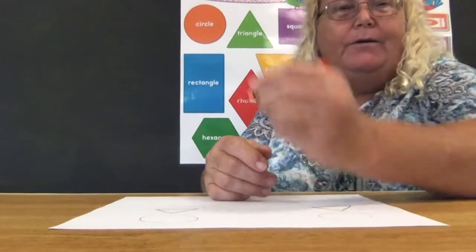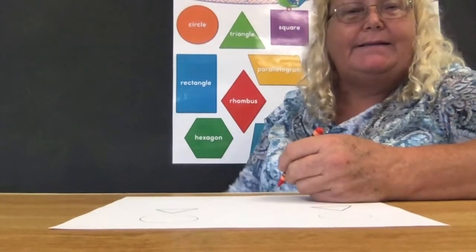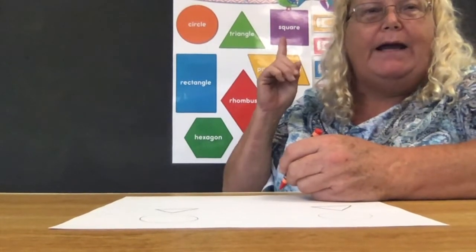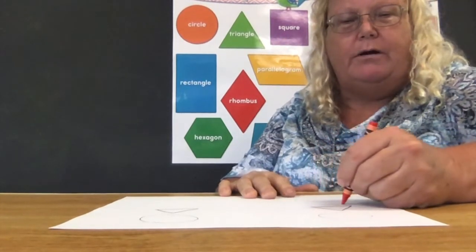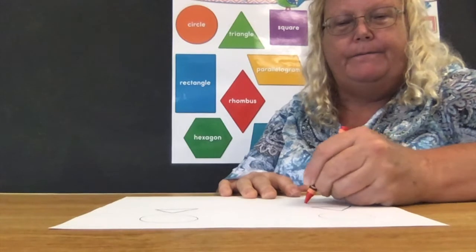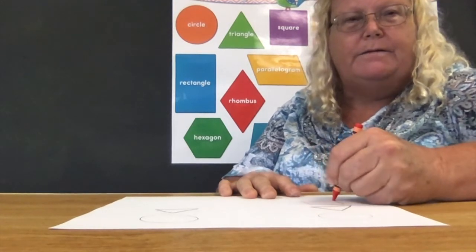A little bit sticking out. I'm resting my hand on the table. What do we got? We got a square. I am going to draw an orange square. See how I did that?